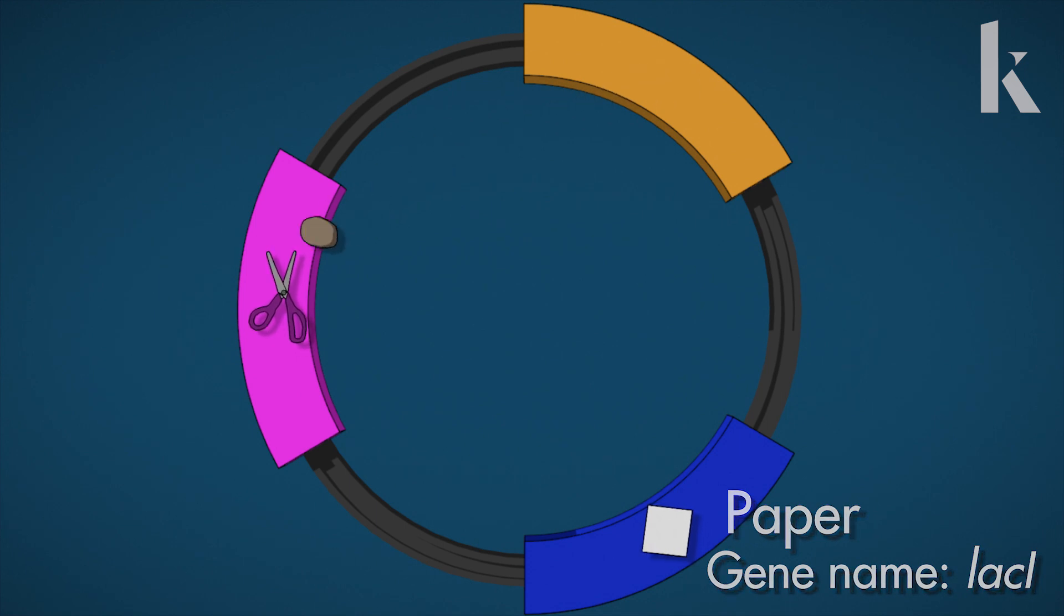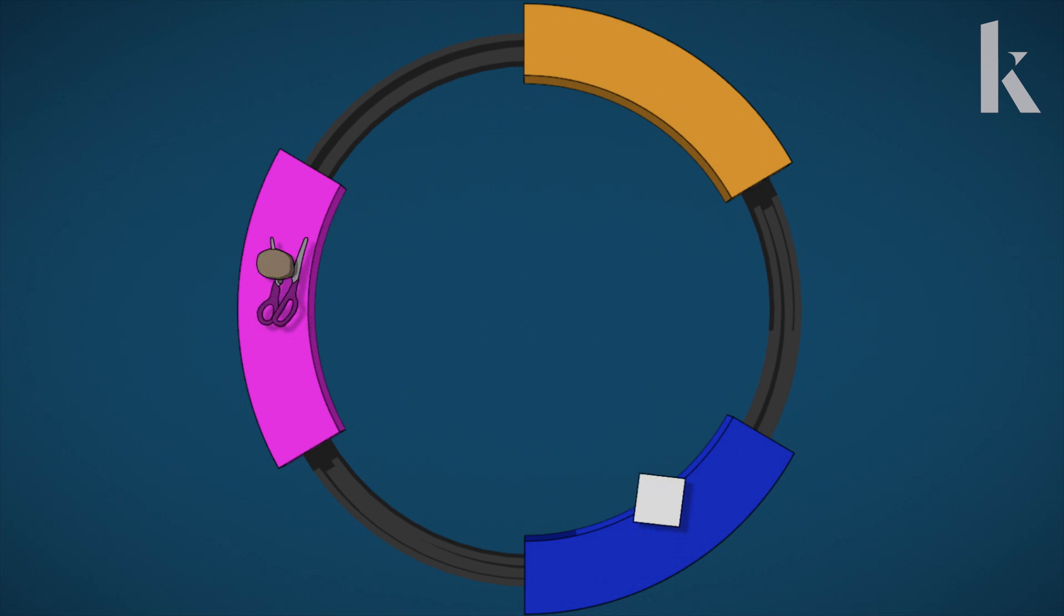But when rock's protein turns off scissors, our paper gene is freed up to make its protein. Paper's protein then builds up, and you guessed it, it turns off rock.